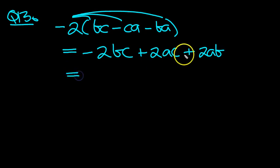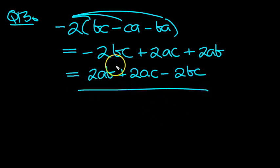So customarily, again, it's nice to write the positive terms before the negative, I think. So I'll put 2AB plus 2AC minus 2BC. And to me, that's easier on the eye, but they're both correct, of course.